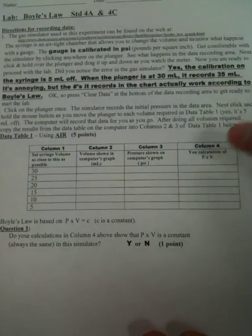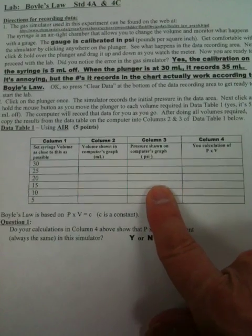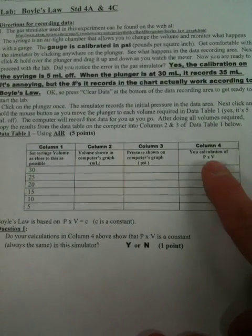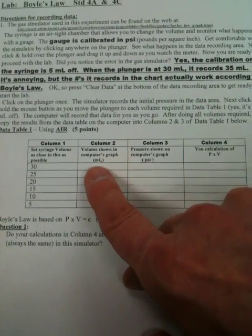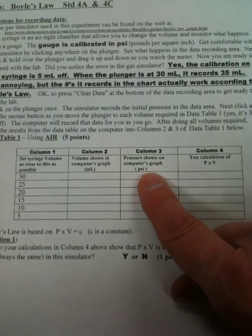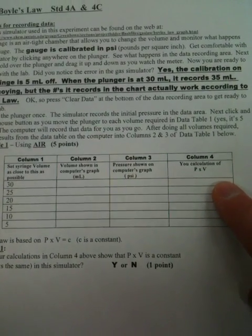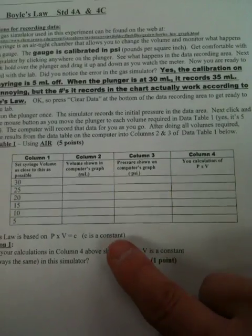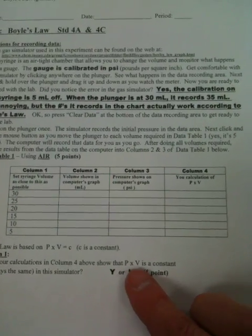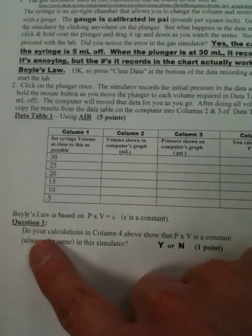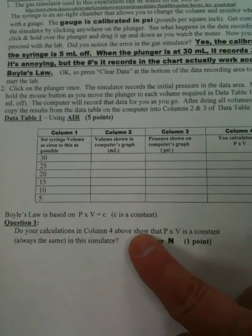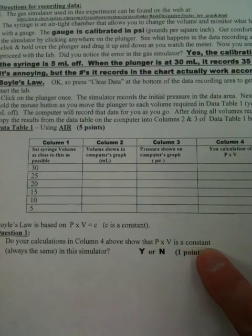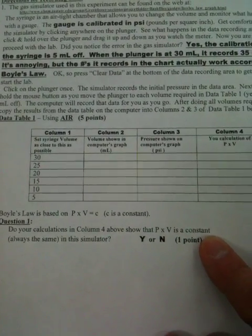Let's go back to the lab sheet. Once you've completed filling in the volume column and the pressure column, you're going to calculate the next column: pressure times volume — column 2 (volume) multiplied by column 3 (pressure) — to give you column 4. The question the sheet is asking is: do your calculations in column 4 show that P times V is a constant? You're going to see whether or not it is.